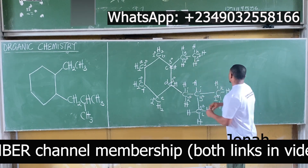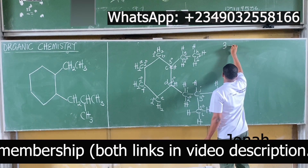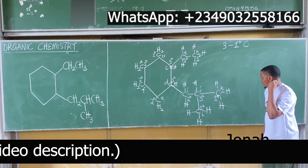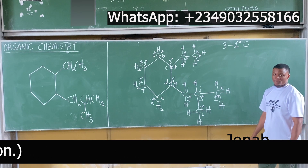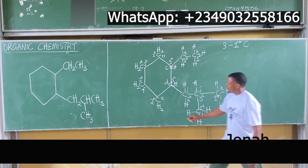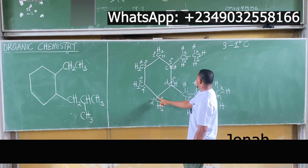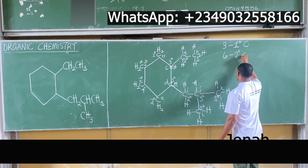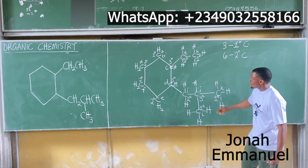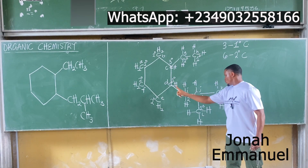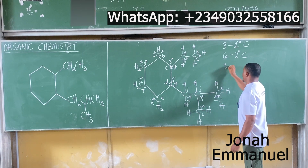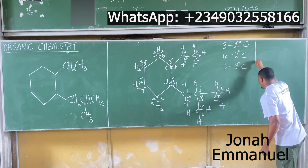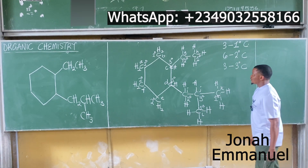In total, how many primary carbons do we have? 1, 2, and 3 — we have three primary carbons. How many secondary carbons? 1, 2, 3, 4, 5, 6 — six secondary carbons. How many tertiary carbons? 1, 2, 3 — three tertiary carbons. Any quaternary? No.